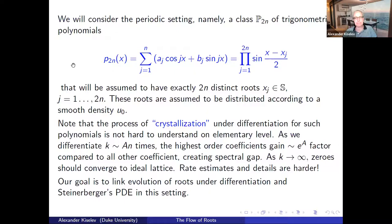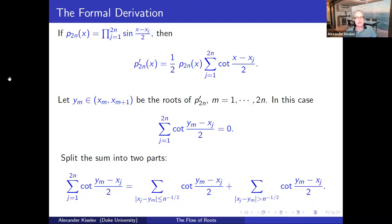Let me sketch the formal derivation of the PDE — it's an analog of Steinerberger's argument in the periodic setting. If we start from this polynomial — a product of sines — and take a derivative, this is what we get. It's the sum of cotangent functions that will decide where the roots are, and the roots are interlaced: between two roots of the initial polynomial there will be a root of the derivative.